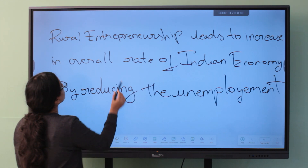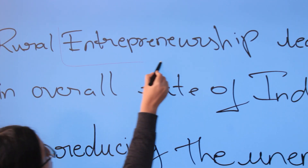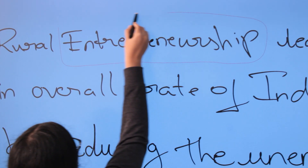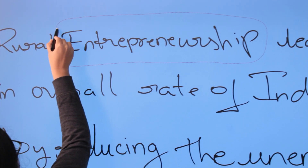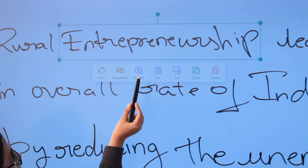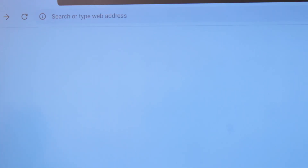Another important feature is Text Search. Click on Select Tool, then you can select the text and a bar will appear. Click on the Text Search icon and it will browse the details of that text.